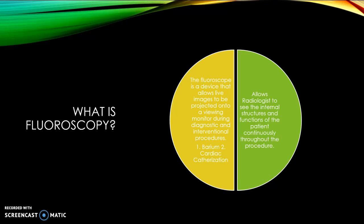There are two types of fluoroscopy that can be performed: barium x-rays and cardiac catheterization fluoroscopy. Barium fluoroscopy allows the doctor to see the movement of the intestines as the barium contrast moves through the patient, and allows the doctor to position the patient for spot imaging. Cardiac catheterization fluoroscopy is used as an adjunct to enable the doctor to see the flow of blood through the coronary arteries to evaluate the presence of arterial blockages. Fluoroscopy is also used to locate foreign bodies and for image-guided anesthetic injections into joints or the spine.